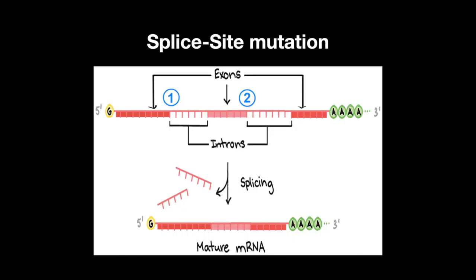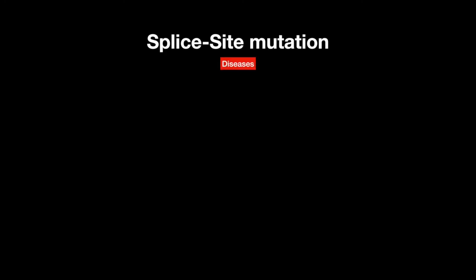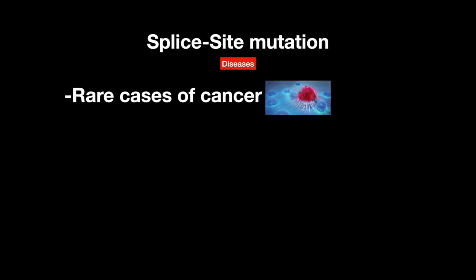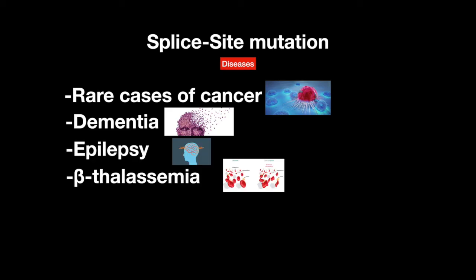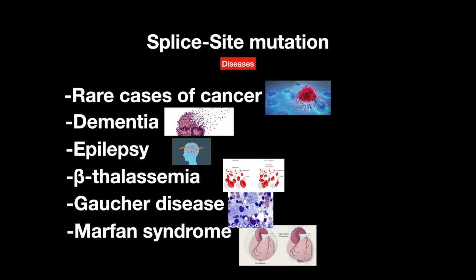A splice site mutation is a portion of intron from the pre-RNA that was not spliced out and included in translation. This will impair or alter the function of the protein. Some examples of this mutation are some rare cases of cancer, dementia, epilepsy, some types of beta-thalassemia, Gaucher disease, and Marfan syndrome.